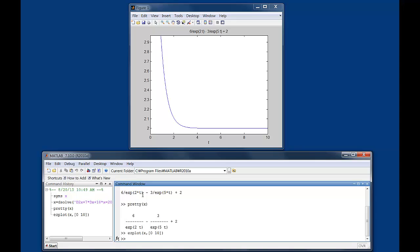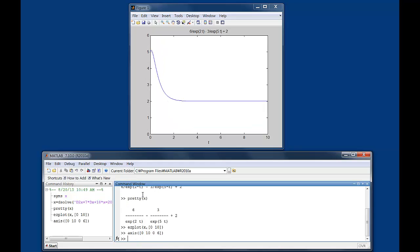One of the common problems of ezplot is that the axis scaling may not be correct. Then we can fix it by using the axis command: x-axis between 0 and 10, y-axis between 0 and 6. Now we capture the answer in the whole range.